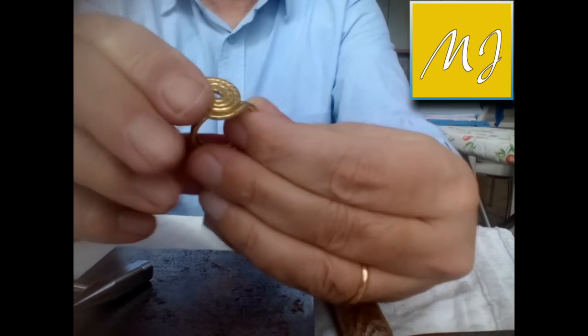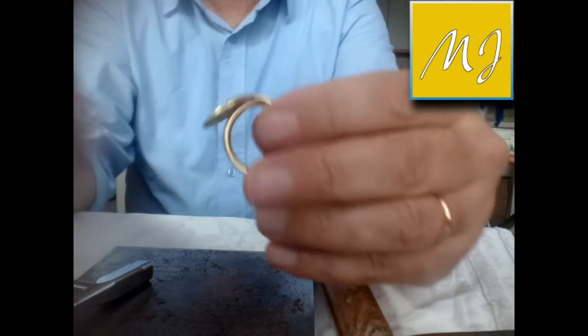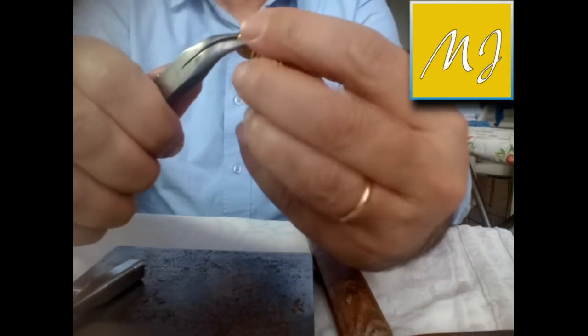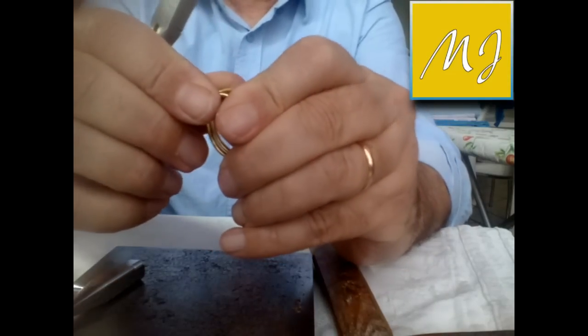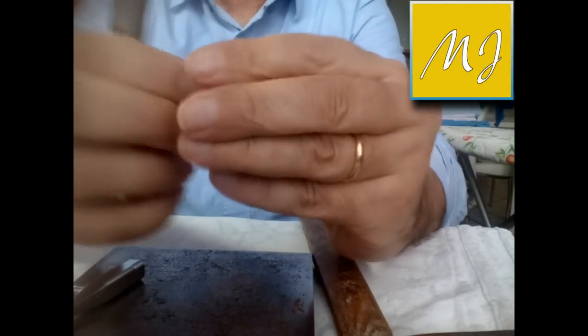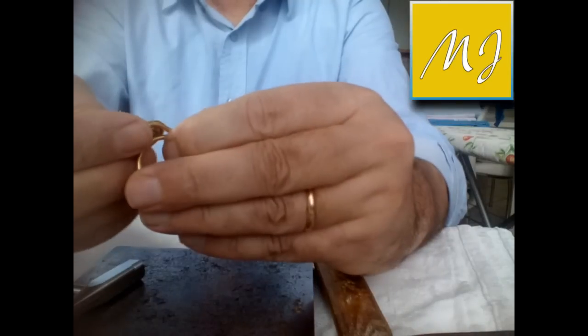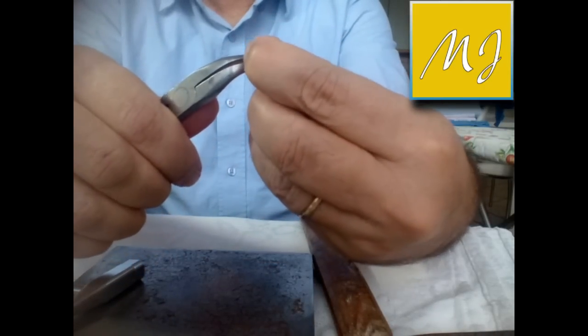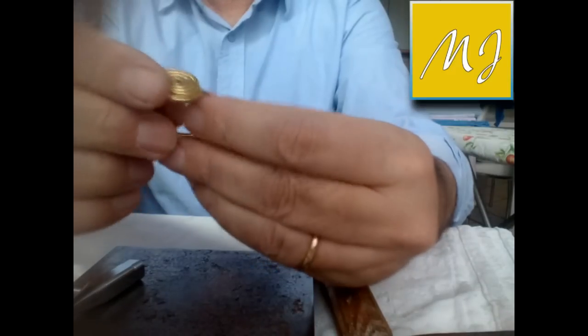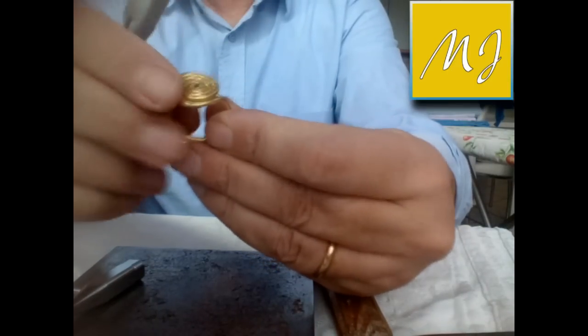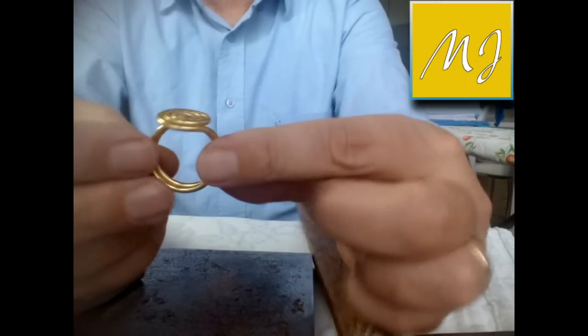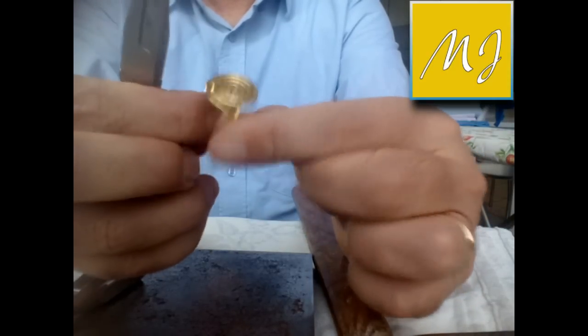Ecco, adesso che abbiamo finito di martellare, sistemiamo la nostra spirale sopra l'anello. Con le pinze cerchiamo di aggiustare in maniera di metterlo simmetrico all'anello e dobbiamo far sì che sia posizionato a dovere. Con pazienza aggiustiamo e questo praticamente...